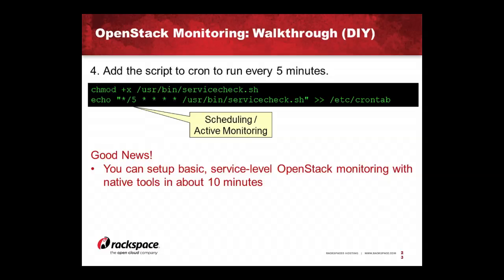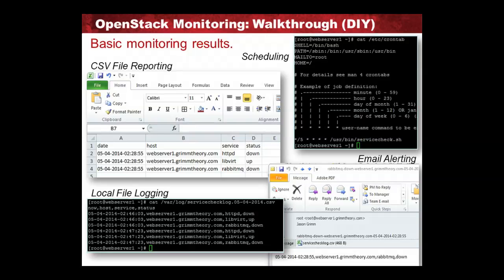That's pretty much it — you're now monitoring OpenStack. That script is monitoring libvirt, HTTP, RabbitMQ, and MySQL. With that few lines of code, we're getting an email alert, logging to CSV, and command line logging as well. It really doesn't take much to get your environment monitored — not just monitored, but we've got logging, scheduling, reporting, and email alerting as well.